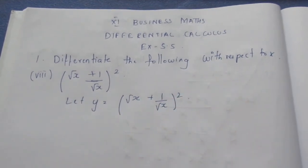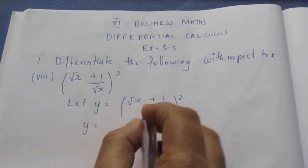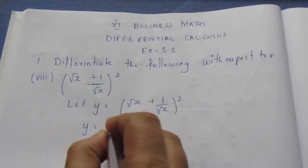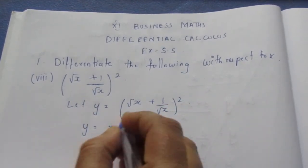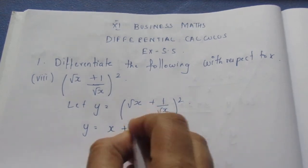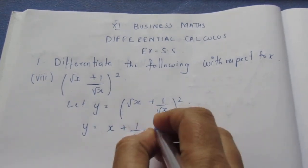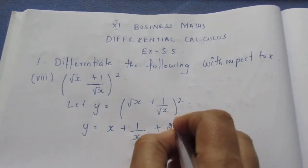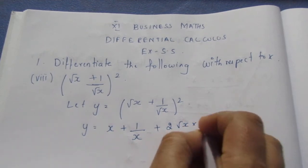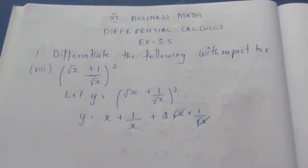Now we will solve this using the (a + b) whole square formula. So root x the whole square gives x, plus 1 by x, plus 2 into root x into 1 by root x. Now root x and root x will cancel.